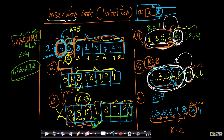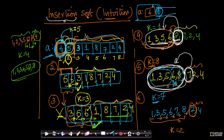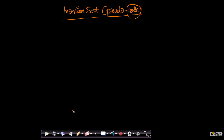In the previous video, we understood the intuition behind insertion sort. We took a very simple example to understand what actually is happening in insertion sort. Now let's try to move to some code. Let's actually write down the code. As important as intuition is, equally important is the ability to convert that intuition into code.